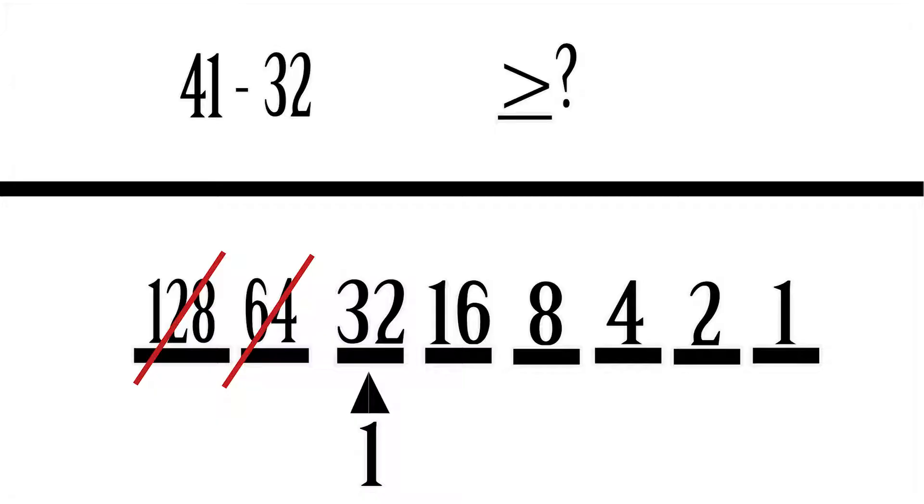Subtract it. 41 minus 32 is 9, so we have nine remaining. So we have to assign nine more value or nine more digits somewhere in this binary. Then you just do the same thing.